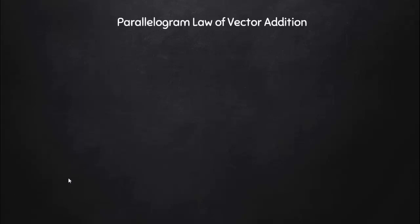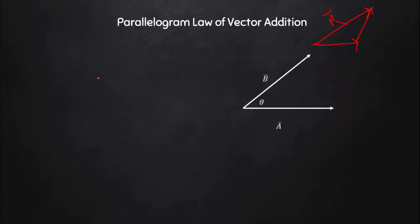If you remember, when we discussed the triangle law, I told you that if two vectors are given, you place the tail of the second vector at the head of the first vector. We prepare that structure, and then the vector drawn from the tail of the first vector to the head of the second vector is the resultant of those two vectors. Here also we have to find the resultant — the method is slightly different, but eighty percent of it uses the triangle law. There is just one small difference in the basic structure.